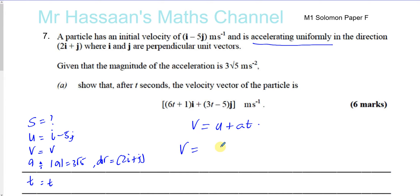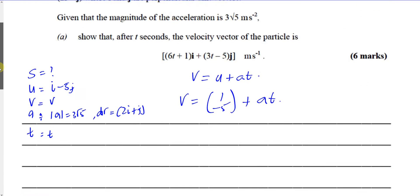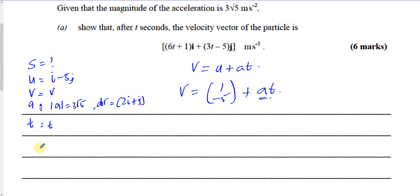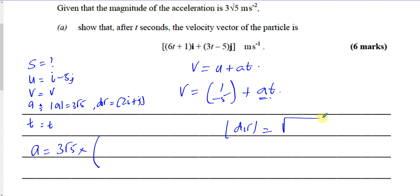We can say v is equal to u, which is (1, -5), plus a times t. The key now is to find what the acceleration a is. The acceleration is going to be the magnitude of the acceleration, which is 3 root 5, times the unit vector in this direction. The magnitude of the direction vector 2i plus j is the square root of 2 squared plus 1 squared, which is root 5.